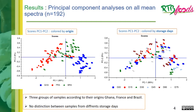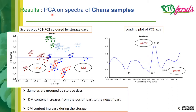To avoid the origin effect, we applied a PCA on spectra of Ghana samples only. In the score plot of PC1 vs. PC2 colored by storage days, we can see that samples are grouped by storage days. From the loading plot of the first axis, PC1, we see positive bands characteristic of water and negative bands characteristic of dry matter storage.